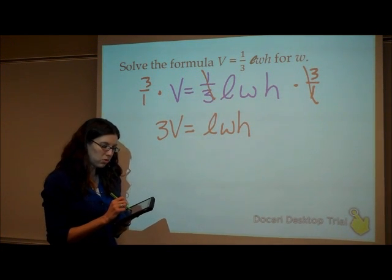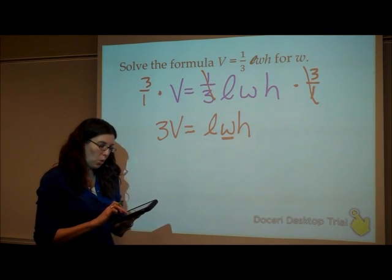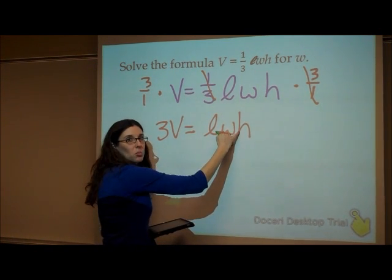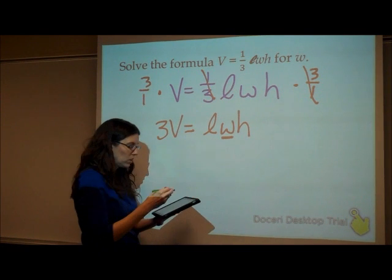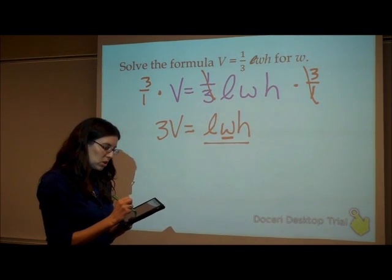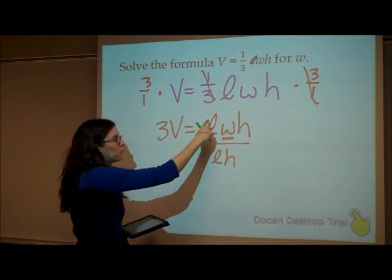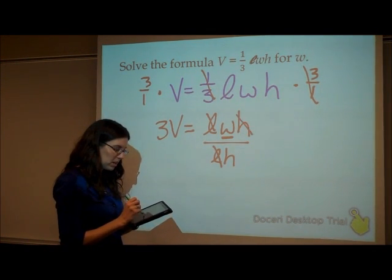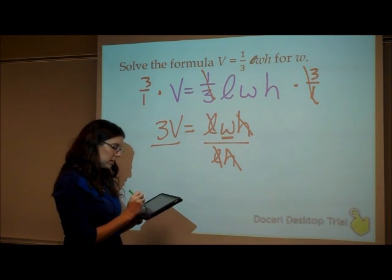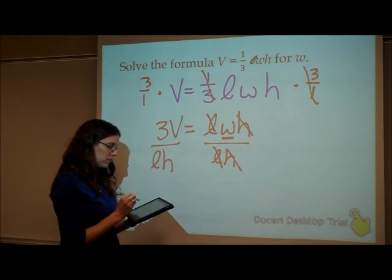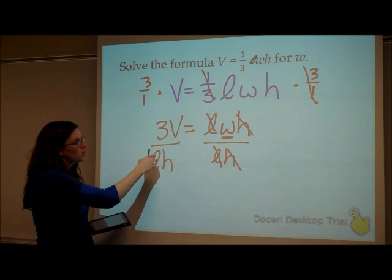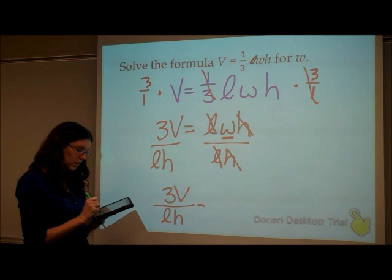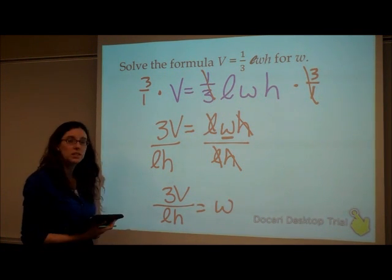We're trying to solve this for the width. We're going to get that on the side by itself in just one step. Both of these are being multiplied by our W. So to get rid of those, I want to divide that side by the length and the height. So dividing by the length gets rid of the length. Dividing by the height gets rid of the height. What I do to the right side, I have to do to the left. So now I'll have 3 times the volume divided by the length and the height is equal to the width.